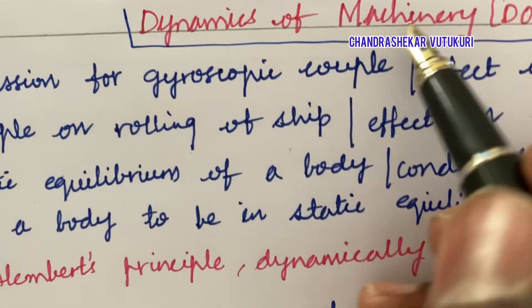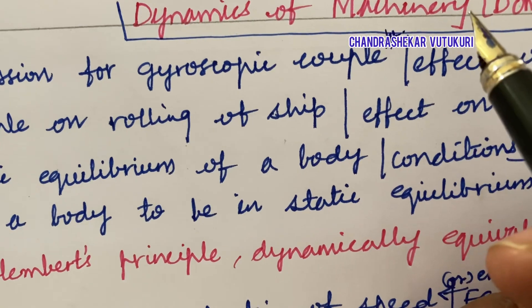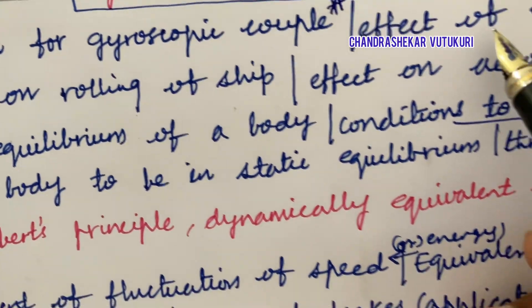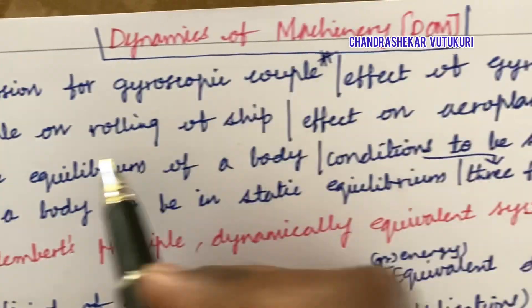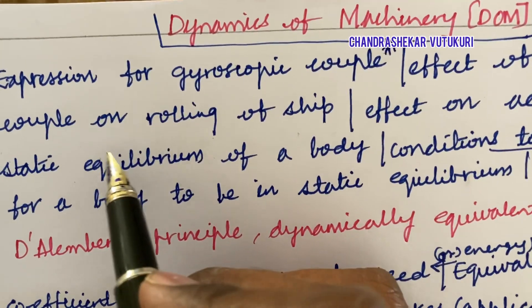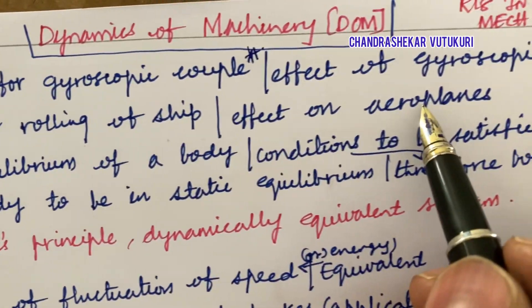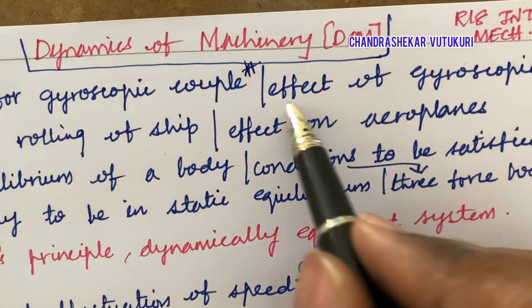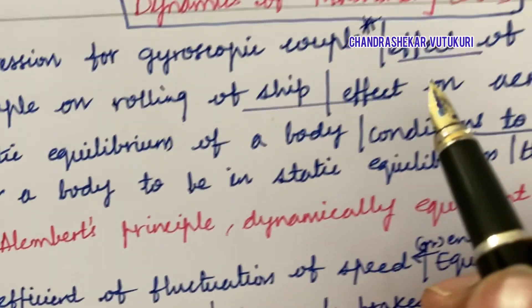The expression for gyroscopic couple is said to be a sure short question — I mean the two-mark or three-mark question. The effect of gyroscopic couple on rolling of a ship and the effect on an aeroplane — such type of question is for sure in the question paper this time.